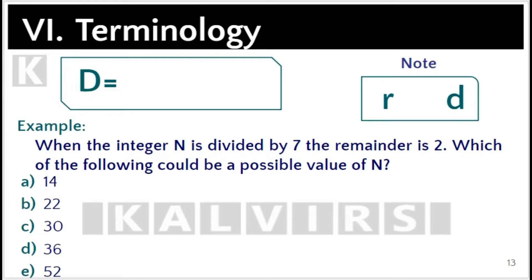From the previous slide we know that the dividend equals the divisor times the quotient plus the remainder. Do not forget that the remainder is always smaller than the divisor.